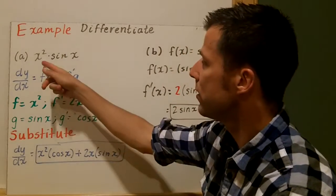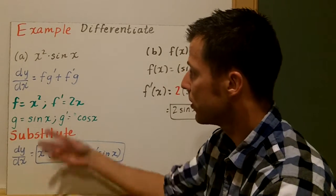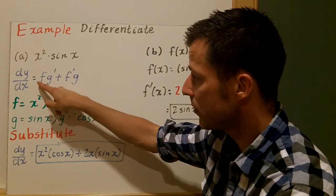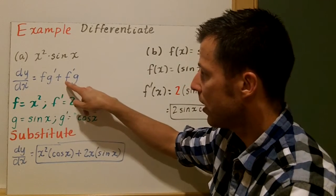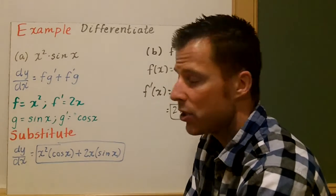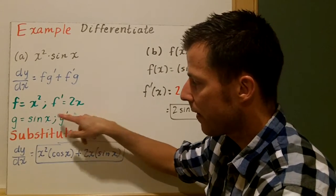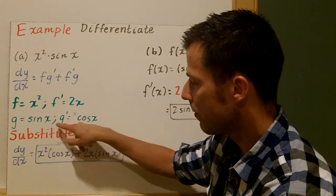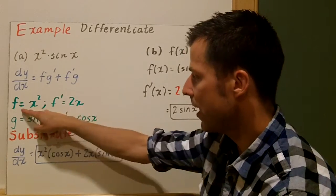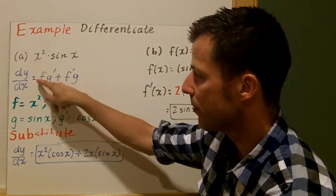On this first one, we're going to differentiate x squared times sine of x. Right away, this is going to be product rule. So x squared times sine of x — here's f, here's g. I rewrote my rule, so the derivative of my function is equal to f times g prime plus f prime times g. We have to find f, g, and differentiate. I'm going to let f be x squared, so f prime is 2x. If g equals sine of x, remember that g prime is cosine of x. So I've got all the pieces now: f, f prime, g, g prime. Now it's substitution.